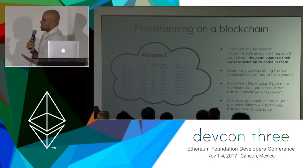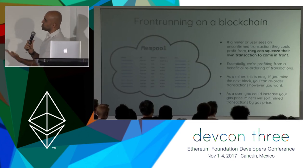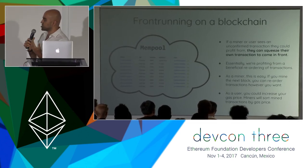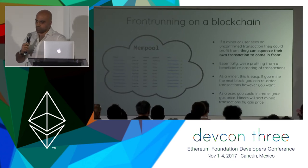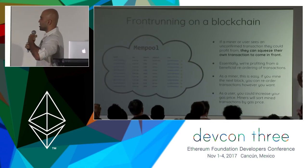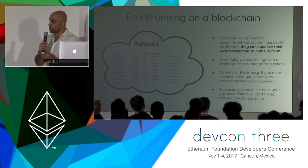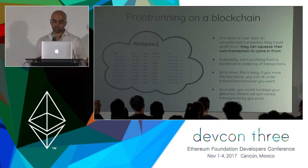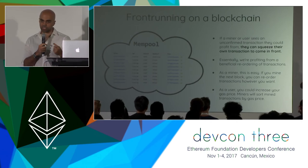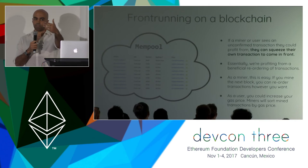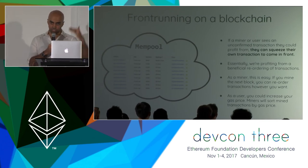You can do the same thing on a blockchain. If a miner or user sees an unconfirmed transaction in the mempool that they can profit from, they can squeeze their own transaction to come in front. You're essentially profiting from a beneficial reordering of transactions. As a miner, this is easy because you get to decide what goes in a block — you can reorder transactions however you want if you mine that block. As a user, you can manipulate where you go in a block by changing your gas price, since most mining clients sort transactions by gas price.